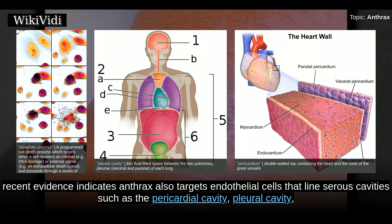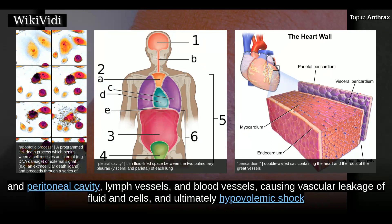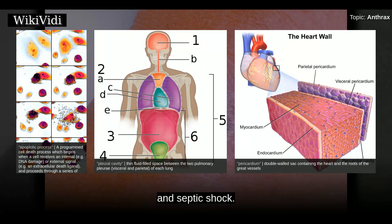TNF-alpha is a cytokine whose primary role is to regulate immune cells, as well as to induce inflammation and apoptosis or programmed cell death. Interleukin-1-beta is another cytokine that also regulates inflammation and apoptosis. The overproduction of TNF-alpha and IL-1B ultimately leads to septic shock and death. However, recent evidence indicates anthrax also targets endothelial cells that line serous cavities such as the pericardial cavity, pleural cavity, and peritoneal cavity, lymph vessels, and blood vessels, causing vascular leakage of fluid and cells, and ultimately hypovolemic shock and septic shock.